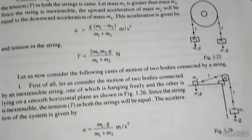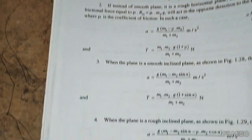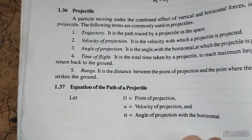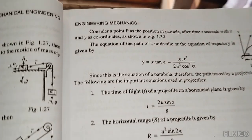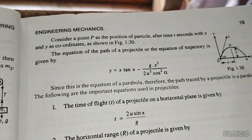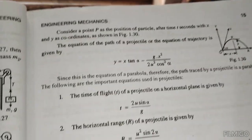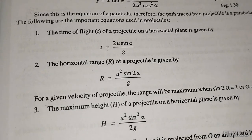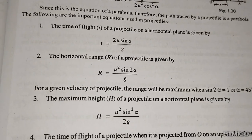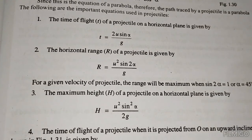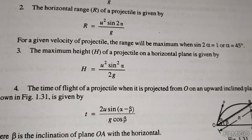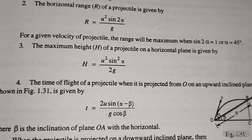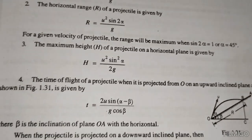A projectile follows a parabolic path. The trajectory equation is y equals x tan alpha minus g x squared divided by 2 u squared cos squared alpha. Time of flight on a horizontal plane is T equals 2u sin alpha divided by g. Horizontal range is u squared sin 2 alpha divided by g. Maximum height is u squared sin squared alpha divided by 2g. Range is maximum when 2 alpha equals 90 degrees, i.e., alpha equals 45 degrees.